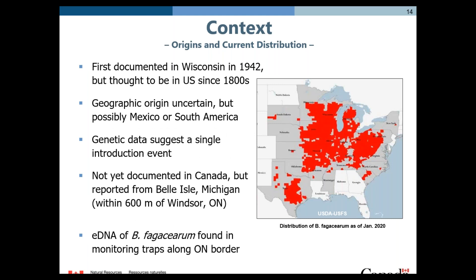Where did oak wilt come from? It was first described in Wisconsin in 1942, but is thought to have arrived sometime in the 1800s from a single introduction event, possibly from Mexico or South America. There have been no reported occurrences of oak wilt in Canada — yet. But it is certainly right at our doorstep. Environmental DNA of oak wilt has been found in monitoring traps along the Ontario border in recent years, meaning the fungus is being moved into the area, probably by insect vectors. It seems like just a matter of time before those vectors find a suitable oak tree on our side of the border.